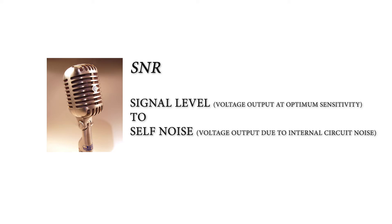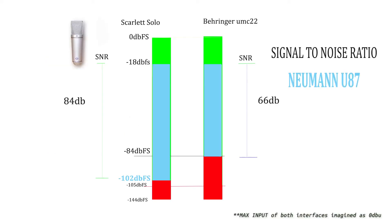The sensitivity and self-noise specification of a mic determines its SNR. A good condenser mic like the Neumann U87 will give you a signal-to-noise ratio of about 84dB, owing to its high sensitivity and low self-noise. That means if you record speaking close to the mic utilizing the mic's optimum sensitivity, the noise floor due to the mic's self-noise will be about 84dB below the signal level. With the gain set to give an input level of -18dBFS, the noise floor due to the mic will be at -102dBFS. If connected to a Scarlett Solo interface, this SNR will be retained as such.